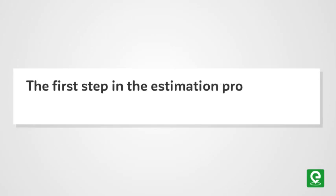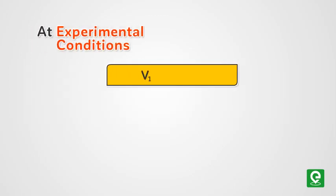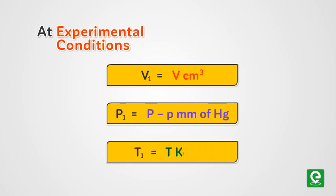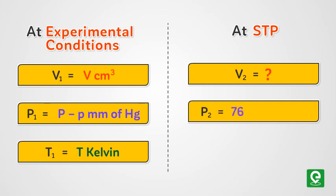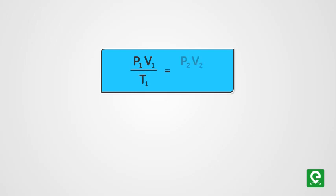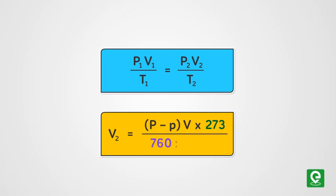The first step in the estimation process is to calculate the volume of nitrogen gas at STP. At experimental conditions, volume V1 equals measured volume V centimeter cube, pressure P1 equals P minus aqueous tension p mm of Hg, temperature T1 equals room temperature T Kelvin. At STP, volume V2 is to be calculated, pressure P2 equals 760 mm of Hg, temperature T2 equals 273 Kelvin. Using the relation P1V1/T1 = P2V2/T2, we have volume V2 = (P - p) × V × 273 / (760 × T).